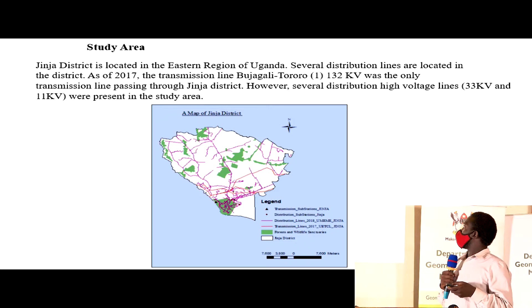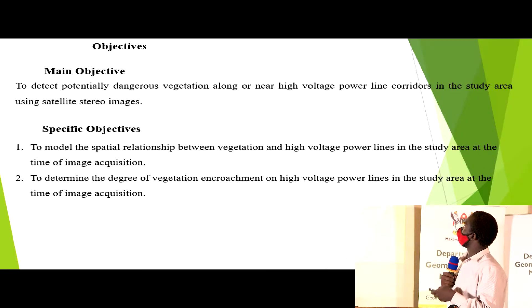My study area is Jinja district, located in the eastern region of Uganda. As of 2017, it had one transmission line, the Jinja-Tororo 132 KV, and many distribution lines of different voltages, 33 and 11 KV, as the diagram shows.